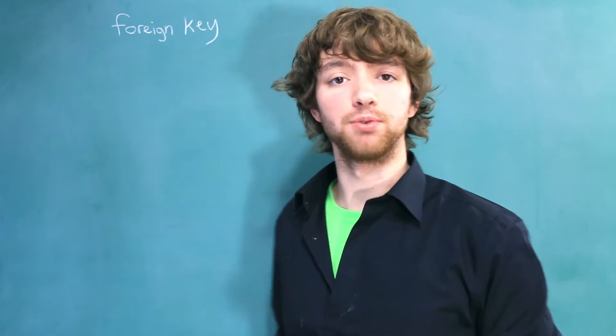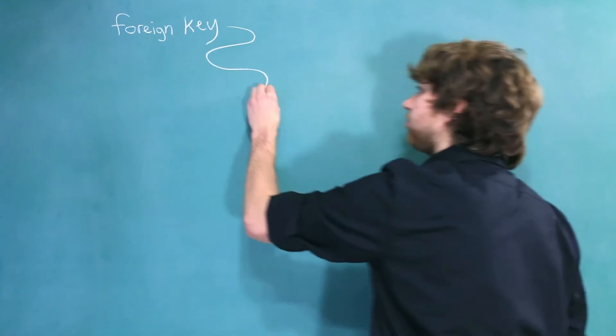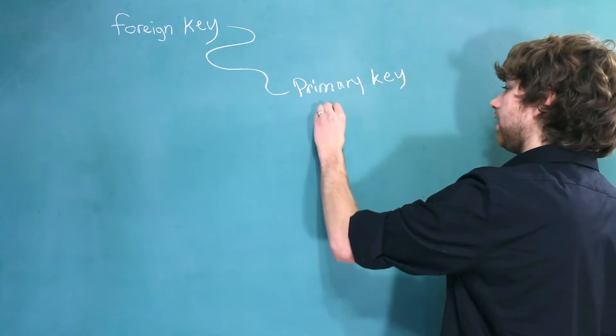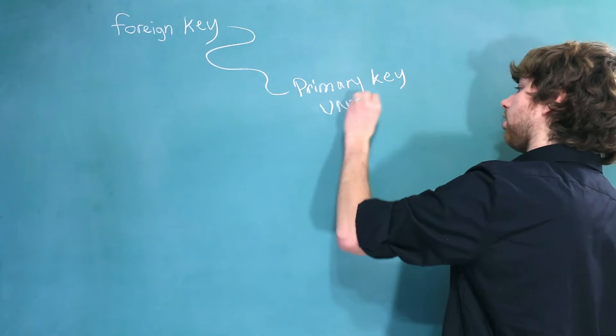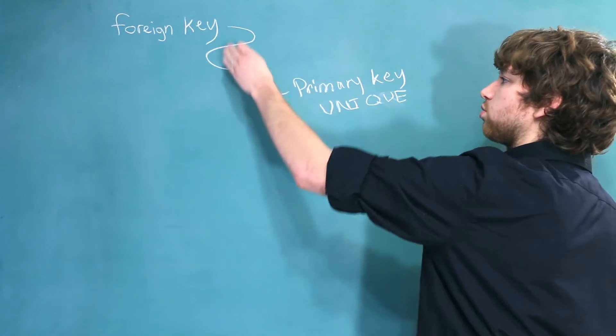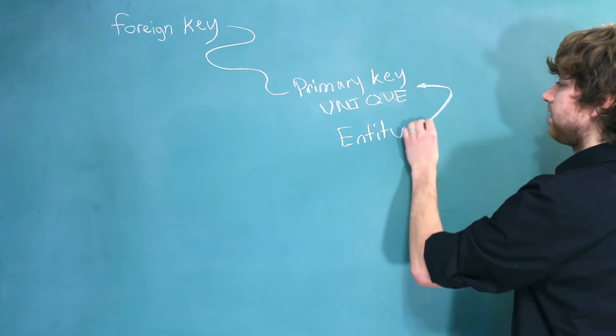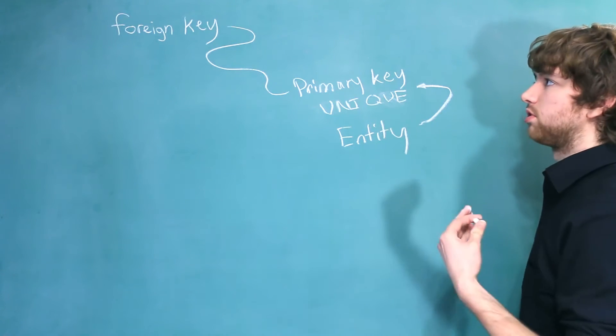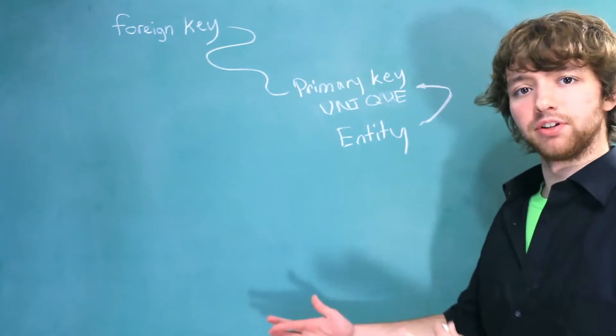A foreign key is a column that references another column in another table. Often this will point back to a primary key. It does not have to reference a primary key, it could reference a unique column. Essentially, it is just a way to reference another entity and that entity has to be labeled unique or else it is not going to know which entity you want to reference.